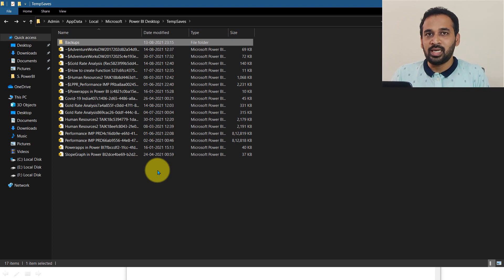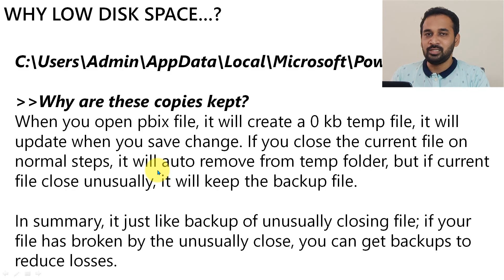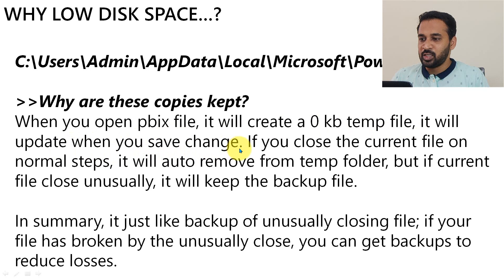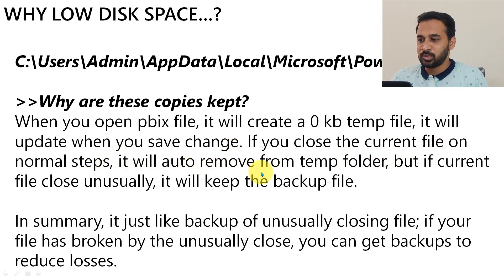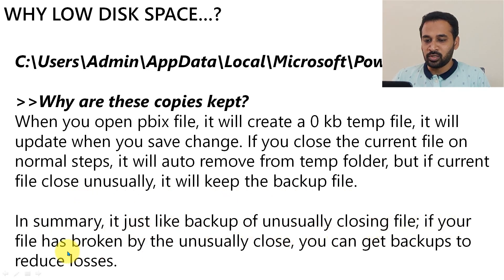Looking at the reasons behind this from the Microsoft website: when you open a PBIX file, it will create a 0 KB temp file. It will update when you save changes. If you close the current file normally, it will auto-remove from the temp folder. But if the file closes unusually, it will keep the backup file. In summary, it acts as a backup for unusually closed files.